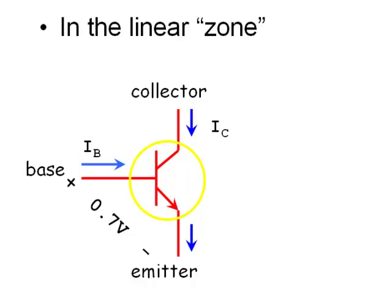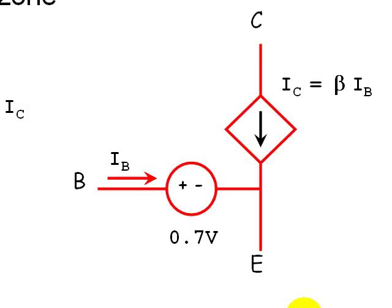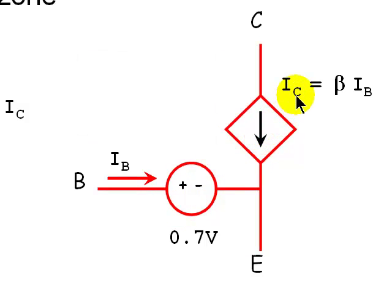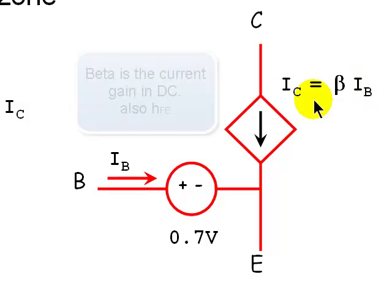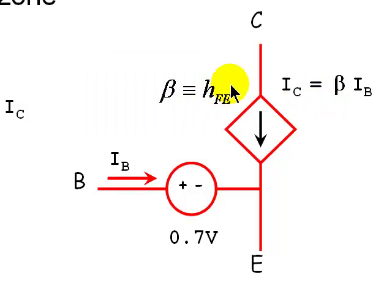In linear mode and DC, the NPN transistor is represented by a very simple circuit: one voltage source that ensures the base is higher than the emitter by 0.7 volts, and a controlled current source that represents the current gain characteristic of the transistor. The collector current is β times IB. β is the current gain, which appears sometimes in manufacturers' datasheets as HFE with uppercase F and uppercase E.